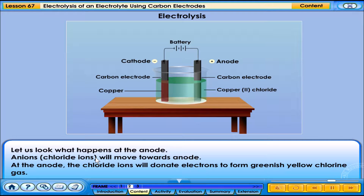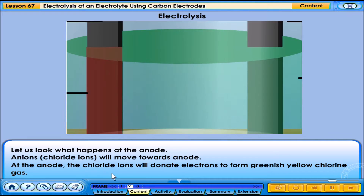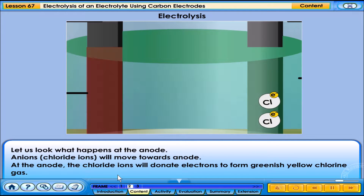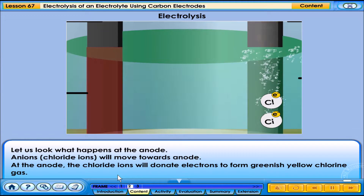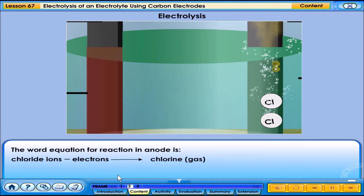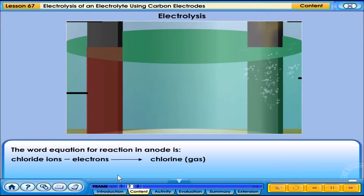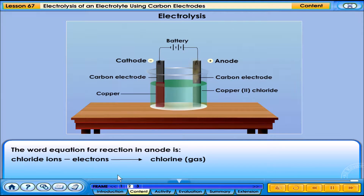Let us look at what happens at the anode. Anions, that is, chloride ions will move towards the anode. At the anode, the chloride ions will donate electrons to form greenish-yellow chlorine gas. The word equation for the reaction at the anode is shown.